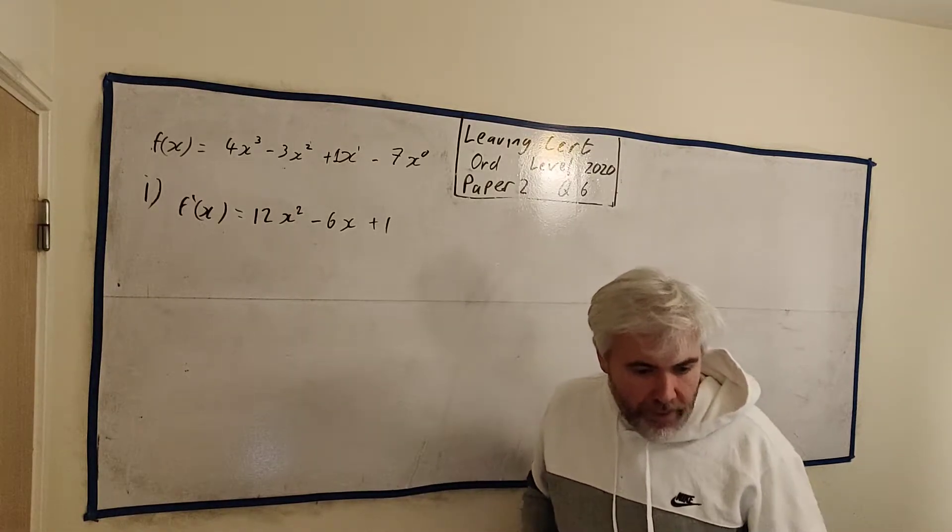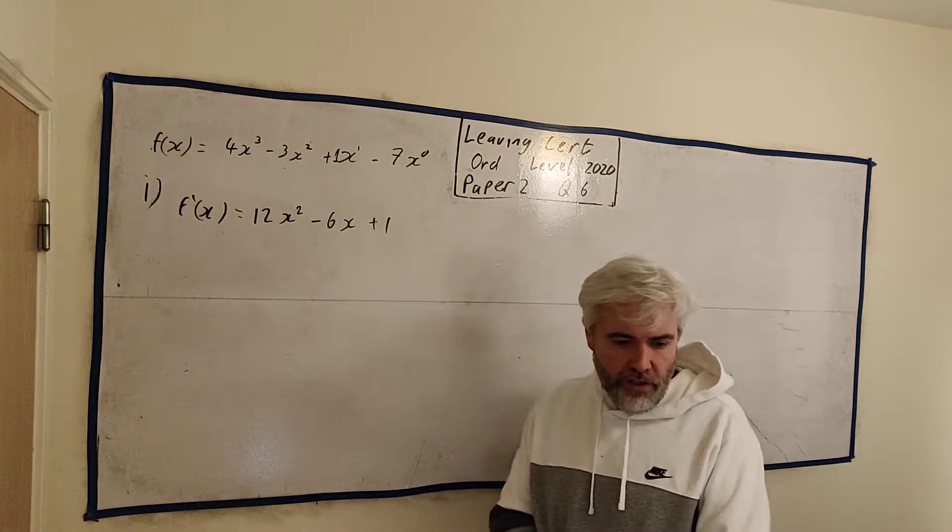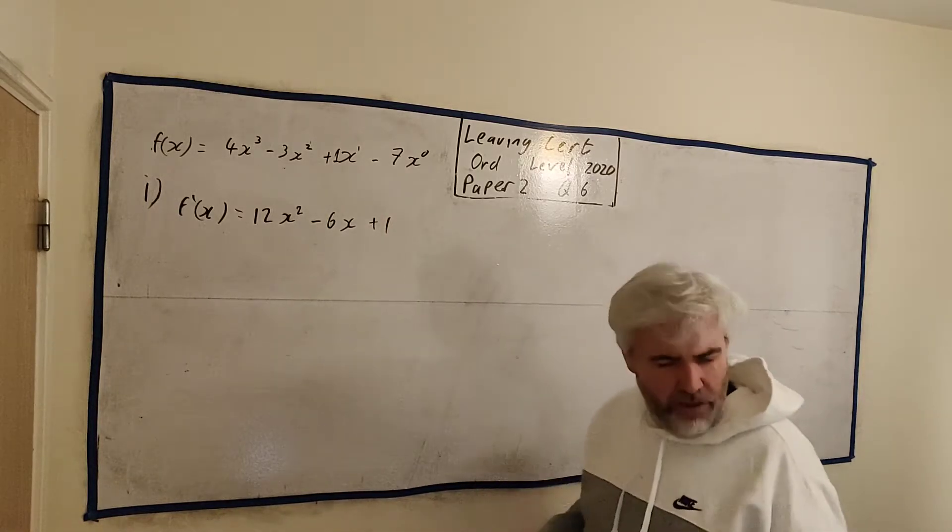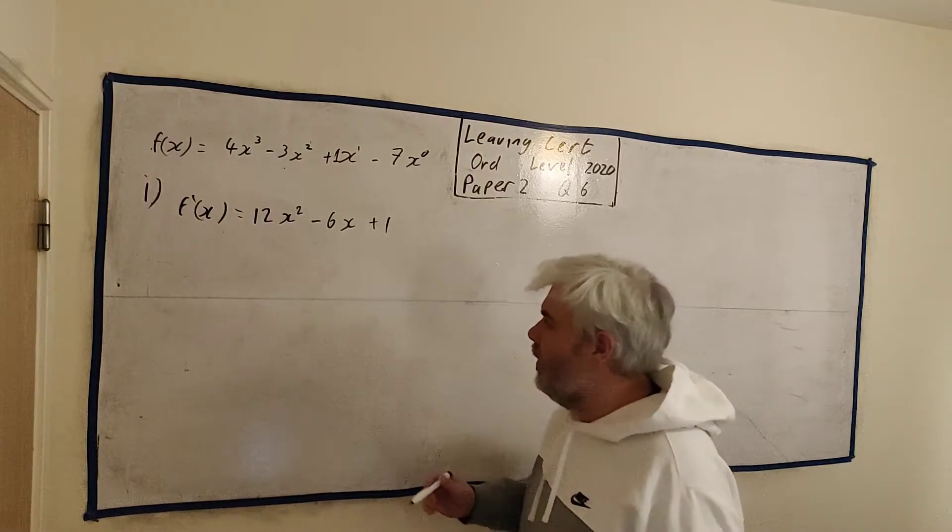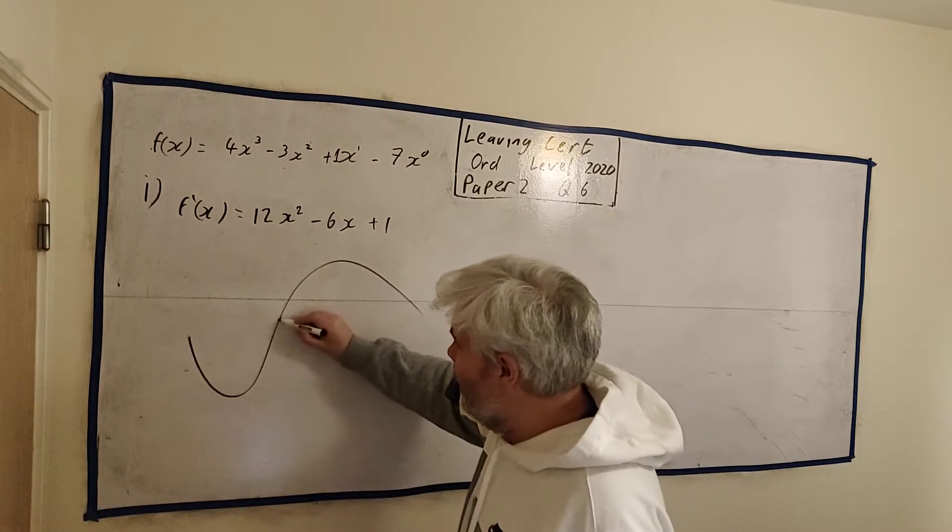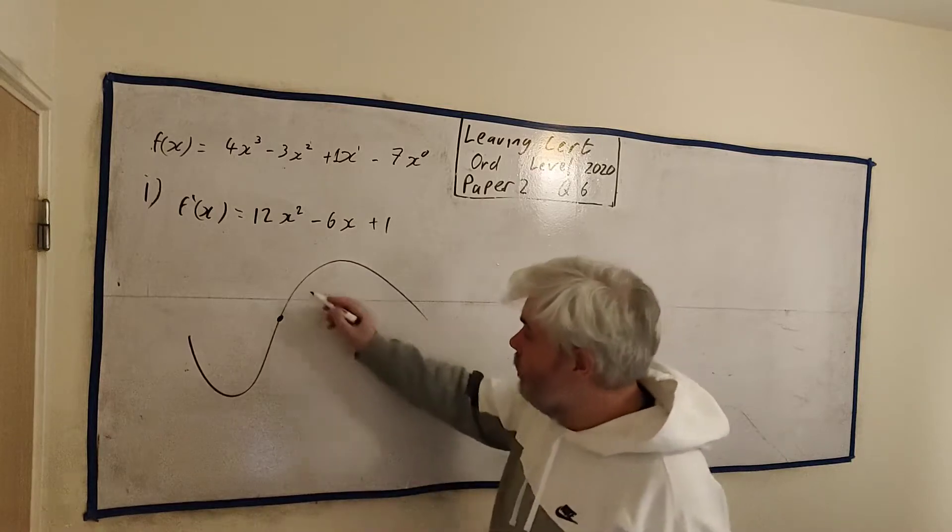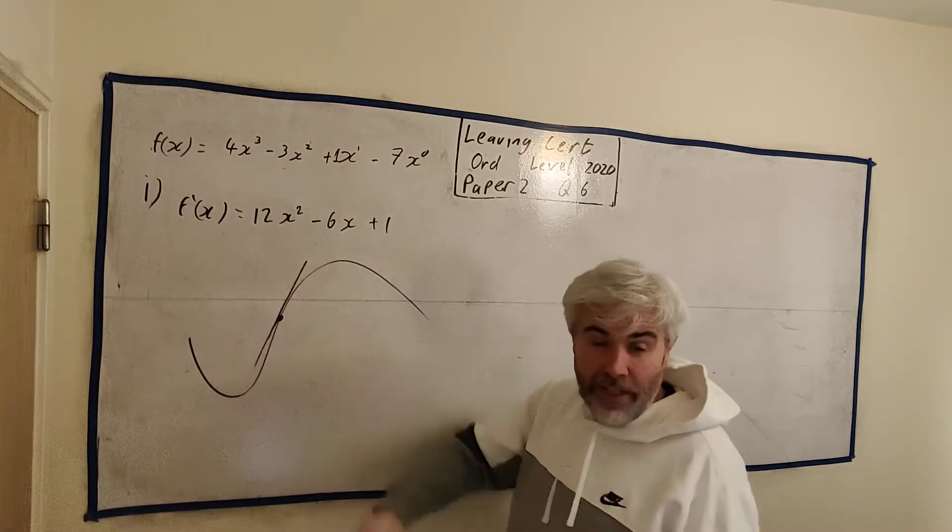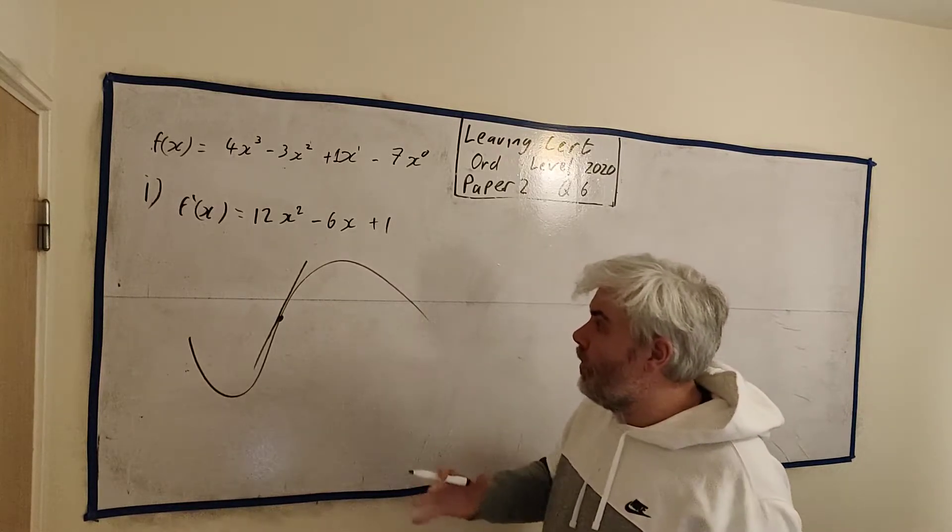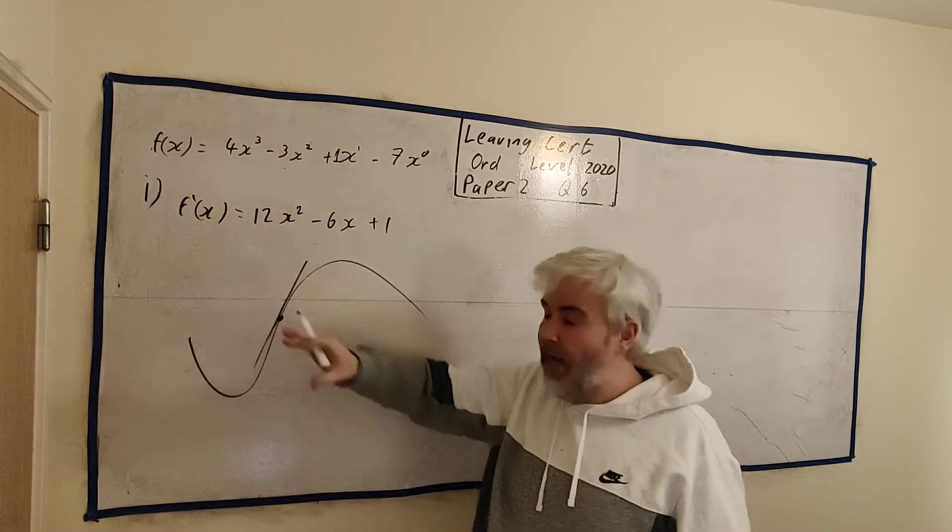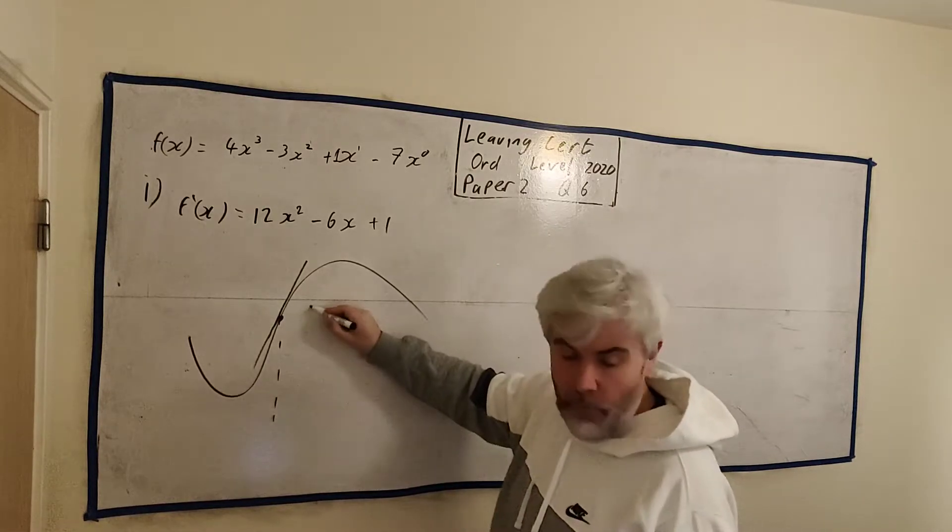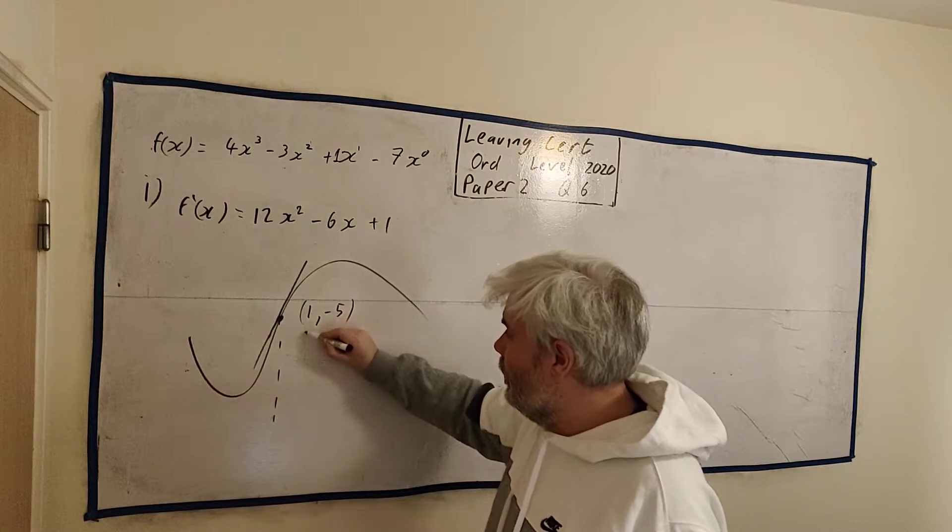This is full marks for part 1. For part 2, they ask you to find the slope of a tangent to this curve at a certain point. I don't know what this curve looks like, but it might look something like this. And they tell us there's a point, say it's here, (1, -5). And there's a slope at that point. How do we find the slope of a point on a curve? We differentiate, which we've already done. And then we put in the number for x that we want to know about. They give us the number for x. It's (1, -5) is the point. So the number for x is 1.